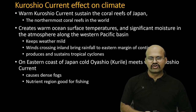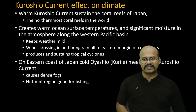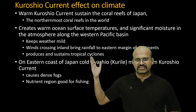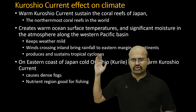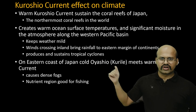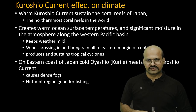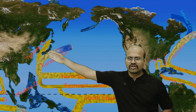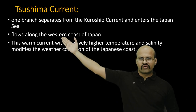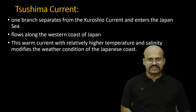Because of the warm waters of the Kuroshio Current, there is moisture in the air above it, and when air flows from ocean to land it brings rainfall to adjoining regions. The Kuroshio also sustains tropical cyclones by providing moisture. It also meets the cold Oyashio Current, forming dense fogs and upwelling, which is good for fisheries. The Tsushima Current flows along the western coast of Japan, with relatively higher temperature and salinity, keeping the Japanese coast warmer and modifying weather conditions there.